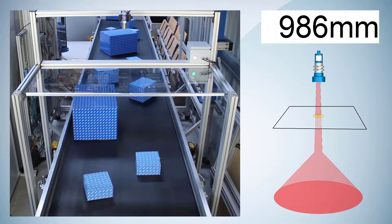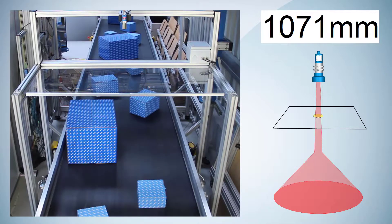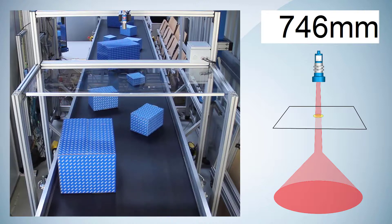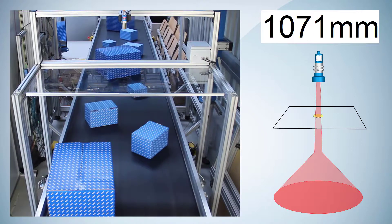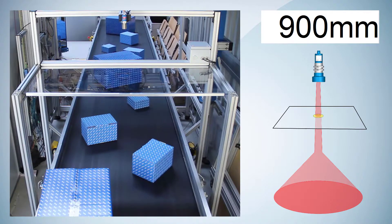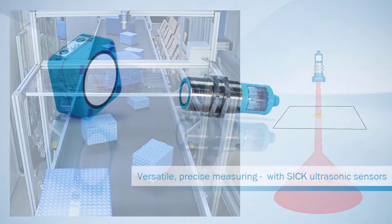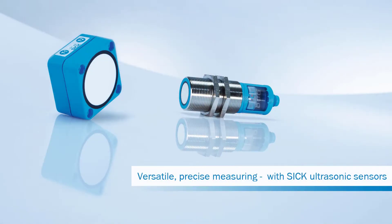Thanks to the variable sound cone adjustments, we can detect and measure the distances of all packages on the conveyor belt to determine their heights for box classification. SICK ultrasonic sensors are very flexible in use, and the variable sound cone adjustment provides even more versatility to perfectly adapt the sensor to your application.